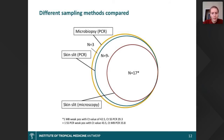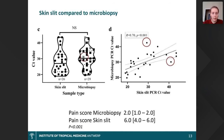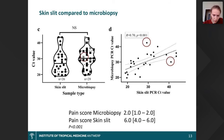In the Venn diagram, 17 patients were positive for both microscopy and the two different PCR methods. Nine additional patients were positive for both the skin slit and the microbiopsy sample, and three patients were positive only for the microbiopsy sample. When comparing the skin slit to the microbiopsy directly, there is no systematic difference in CT value — a proxy for parasite load. However, individual patients sometimes showed quite large differences between CT values for one sample versus the other, sometimes in either direction, suggesting random but sometimes substantial variation in parasite load.